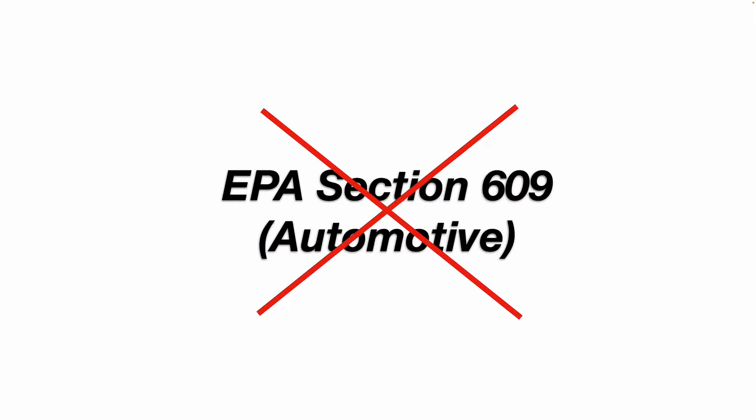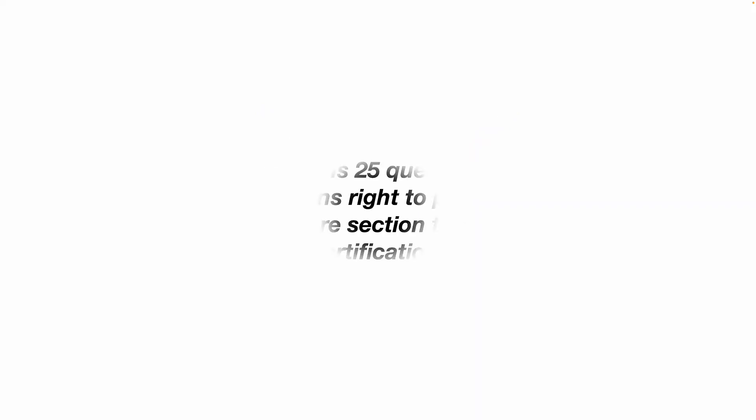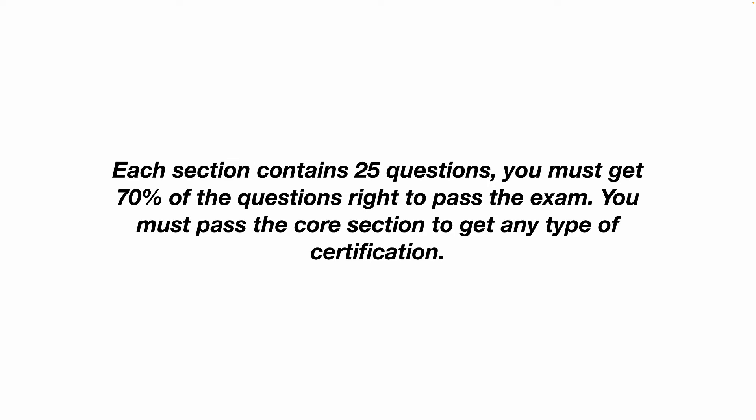To clarify, EPA section 609 is for automotive HVAC — it is not the same thing as EPA section 608. On the exam, there are 25 questions for each section. You must get 70% of the questions right to pass, and most importantly, you must pass the core section to get any type of certification.